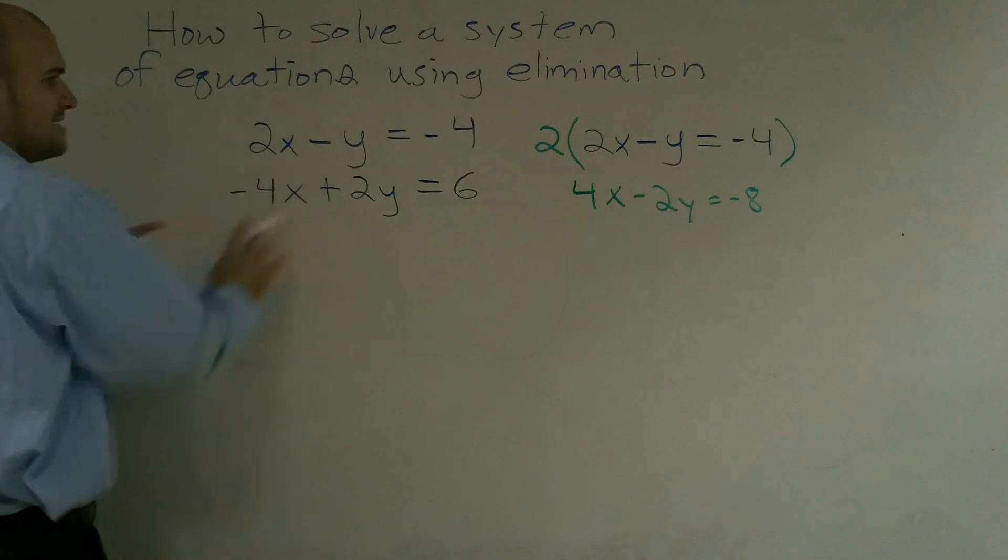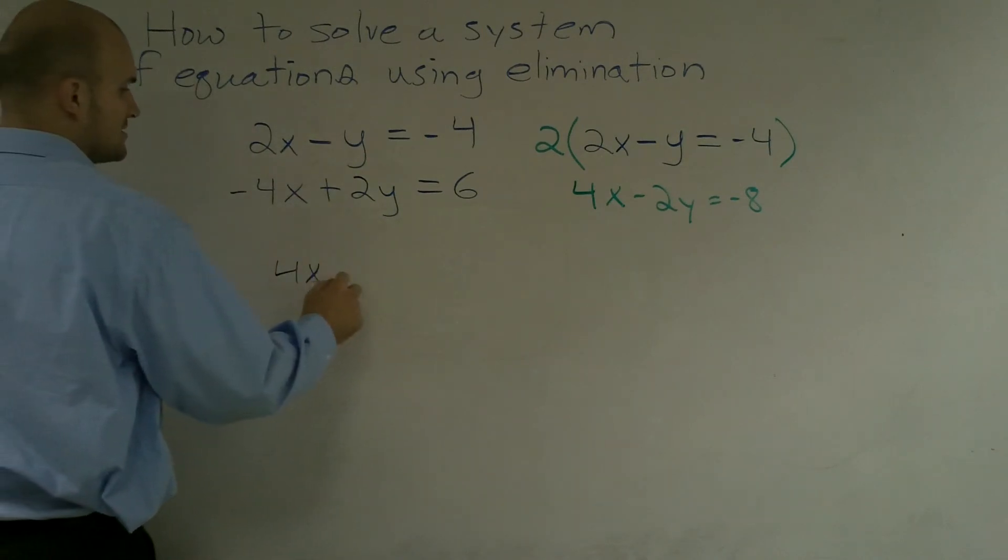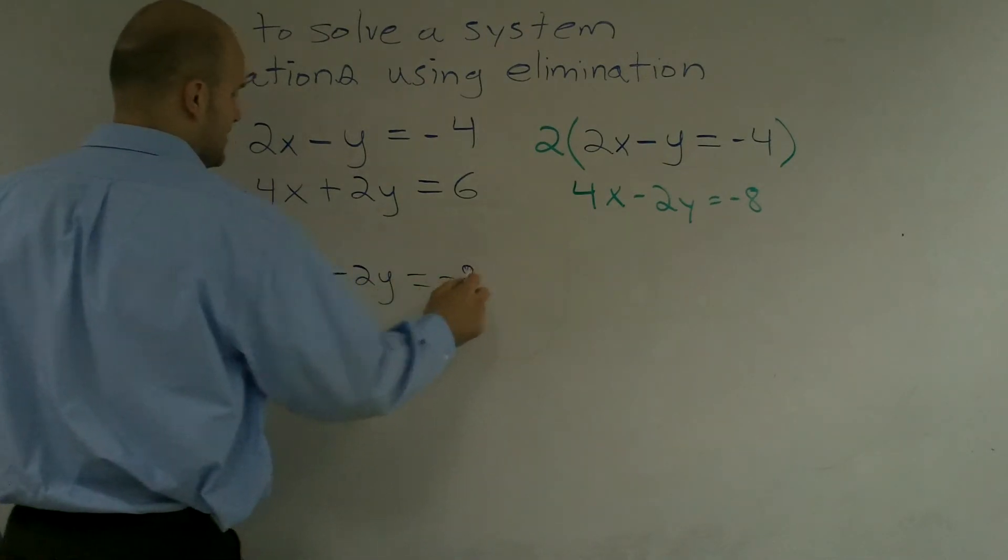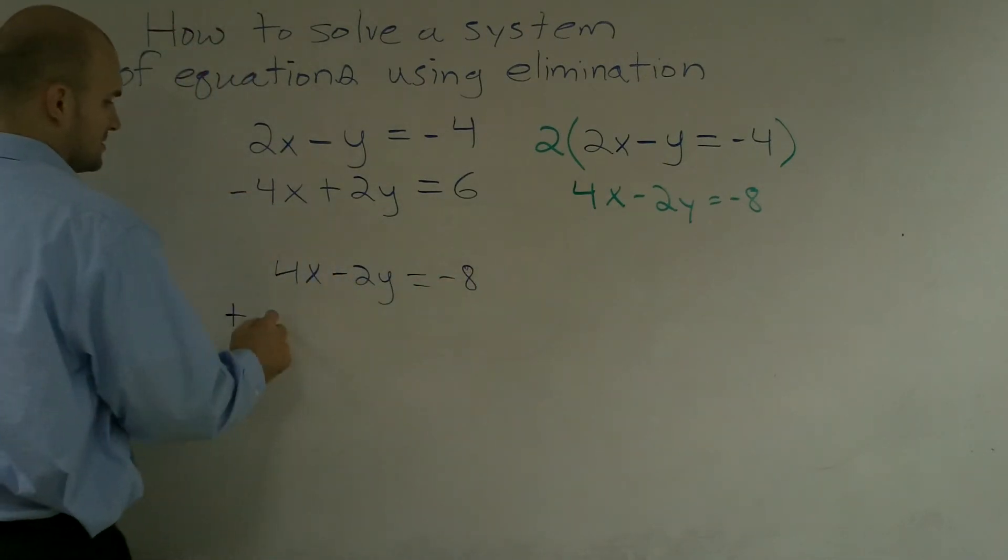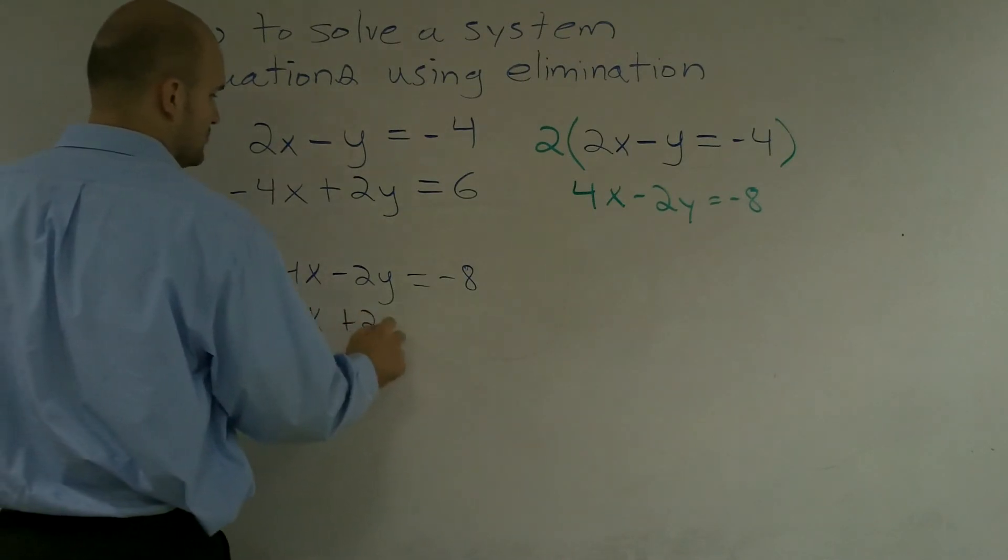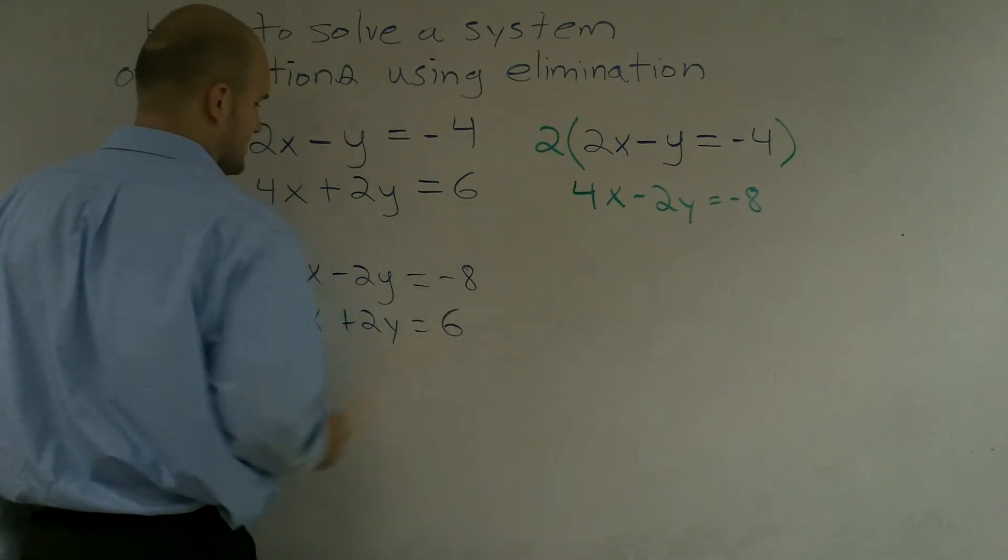So I'm just going to rewrite that on top of my second equation so it's easier for you guys to see how I'm adding. I'm going to have 4x minus 2y equals negative 8 plus negative 4x plus 2y equals 6.